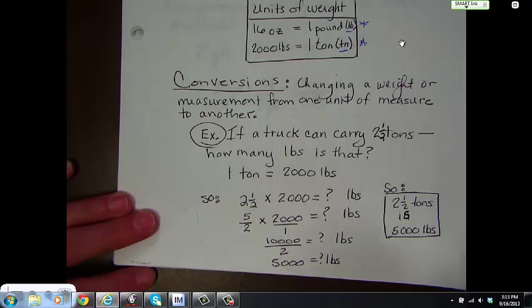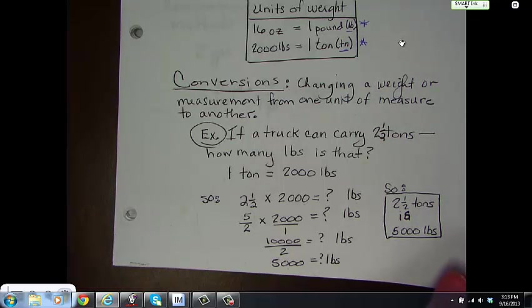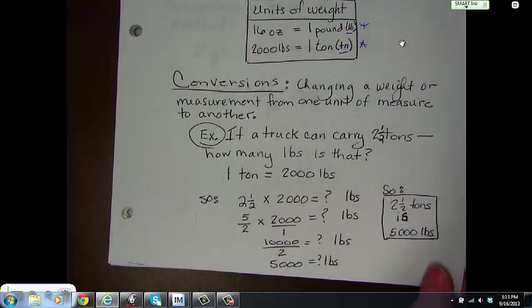So, two and a half tons is 5,000 pounds. We could have done that in our head because we know that one ton is 2,000. Two tons would be 4,000, and another half would be 5,000. But, if it would have been a harder number, this would have been the perfect way to set it up.